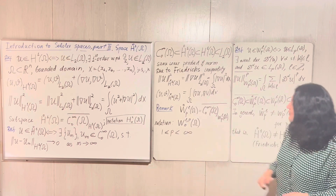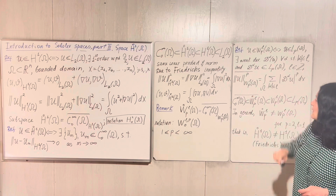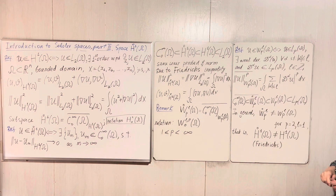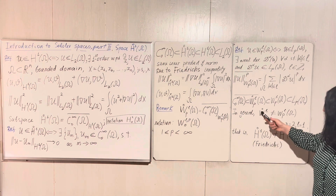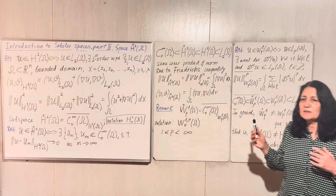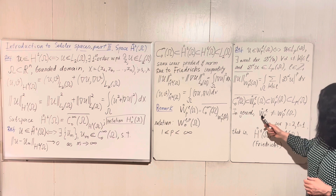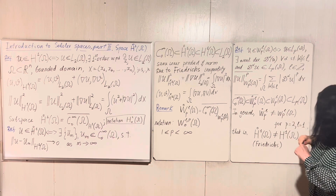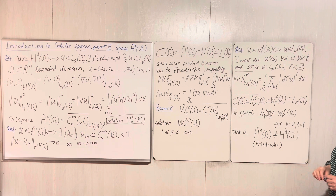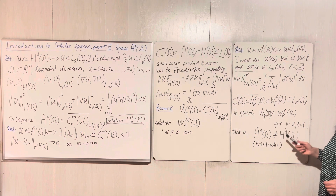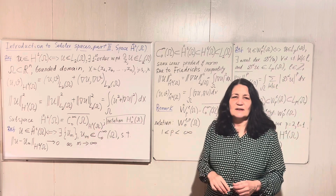There are different notations for these spaces with zero boundary conditions — sometimes people write the zero in the bottom. For the same reason as before, we have the inclusion of C∞₀ in Wpl-zero. In general, for a domain omega, these two spaces — Wpl and Wpl-zero — do not coincide. This distinction will be easily seen for H1-zero using Friedrich's inequality.